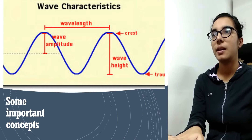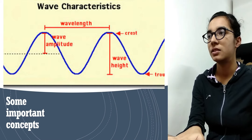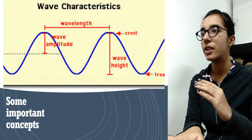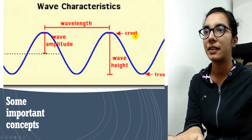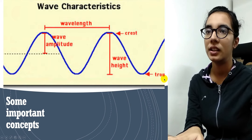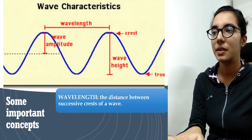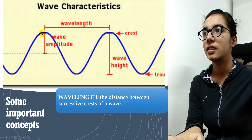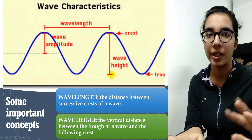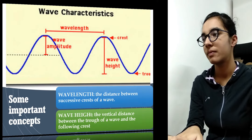Let's understand some important wave terms. The highest point of a wave is known as the crest, and the lowest point is known as the trough. The wavelength is the distance between successive crests of a wave. Wave height is the vertical distance between the trough of the wave and the following crest. It is a fact that the impact of tsunami is less over oceans and more near the coast.